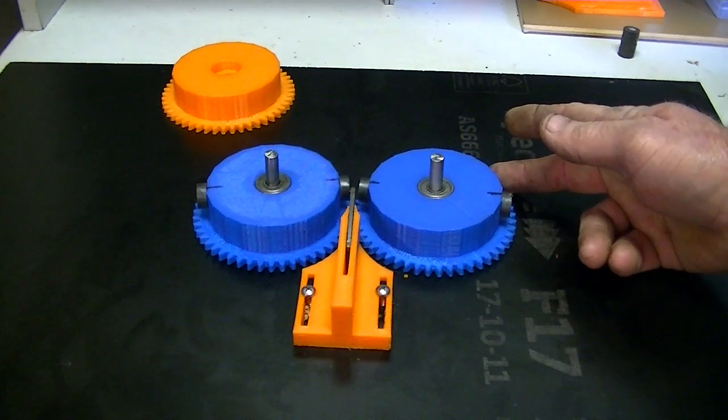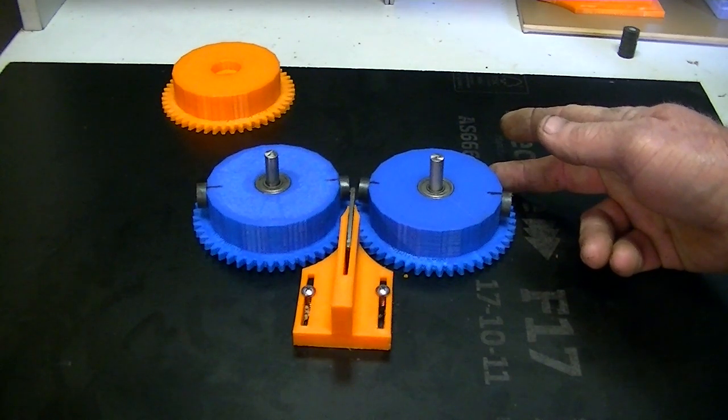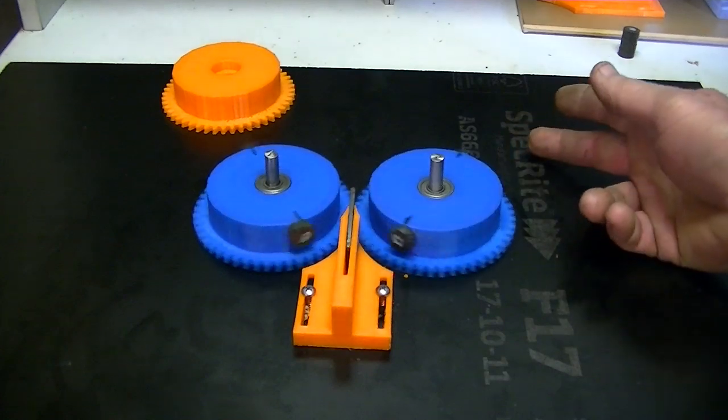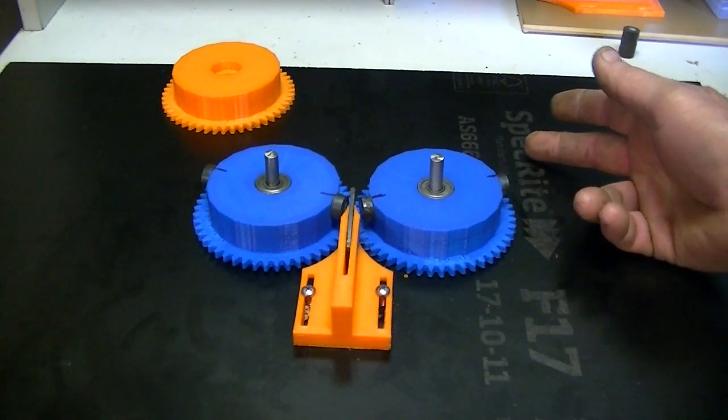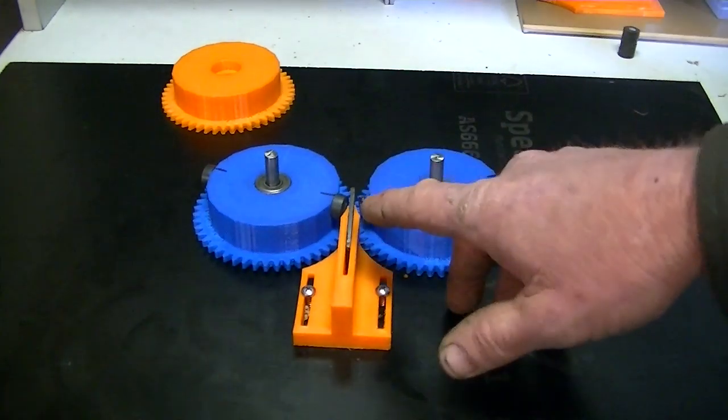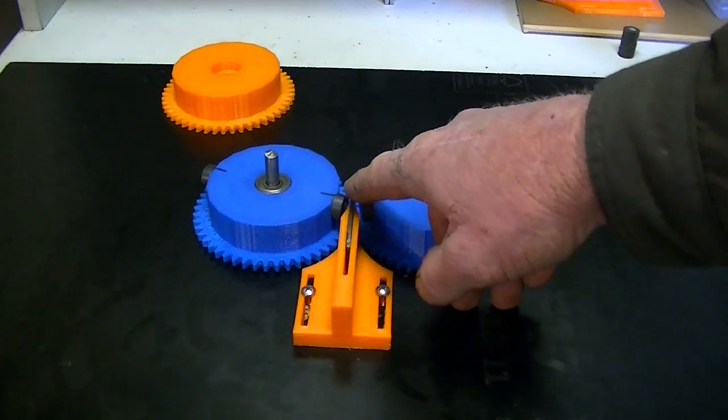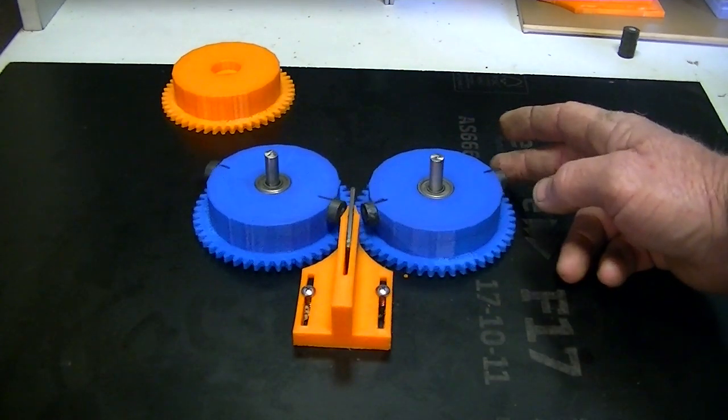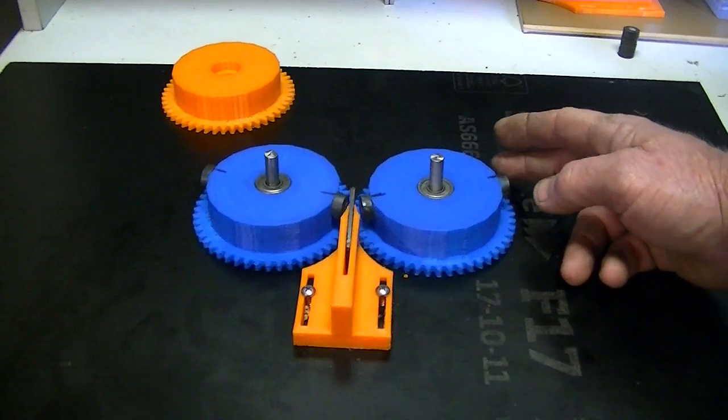And of course once it got past a certain point our two rotor magnets repel each other and the cycle was supposed to keep on going. But although there was supposed to be no sticky spot there, we have a very big sticky spot.